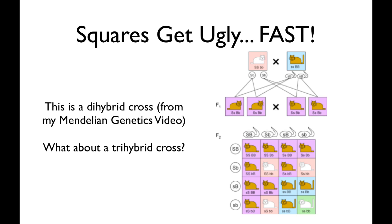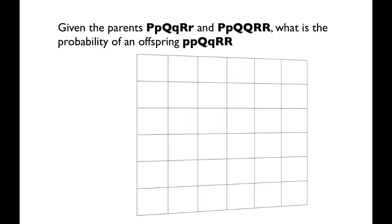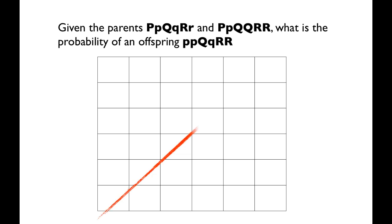Punnett squares get ugly pretty fast, and so the value of understanding probability becomes evident very quickly. This is the dihybrid cross from my Mendelian genetics video — you can still do it with a dihybrid cross, but on an exam that's going to take you a while. Anything bigger than that, you really need this probability skill. Look at a trihybrid cross — are you really going to do a square like this on an exam in a timed situation? Understanding probability makes this pretty easy to do.